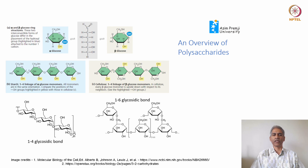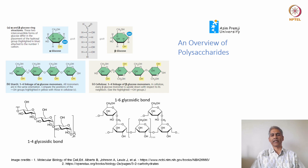Starch is a polymer of alpha glucose monomers and can have two kinds of linkages. They can either form the 1,4 glycosidic bond, which is two glucose molecules coming together in a dehydration reaction, giving a linear polymer or linear chain. You can also have a 1,6 glycosidic bond, which leads to branching in the polymer, giving a more open structure.